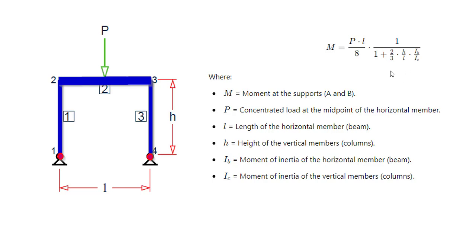The H by L term represents the ratio of the height of the columns to the length of the beam. The inertia ratio represents the ratio of the moment of inertia of the beam to the columns, and we have a factor of two-thirds. This factor is derived from the slope deflection or moment distribution method, accounting for the contribution of each member's stiffness to the overall deflection and moment.